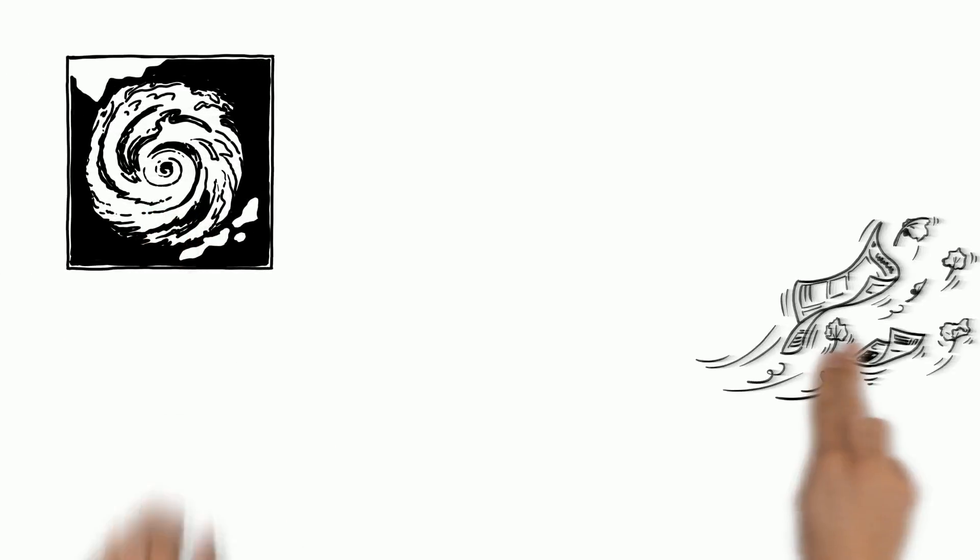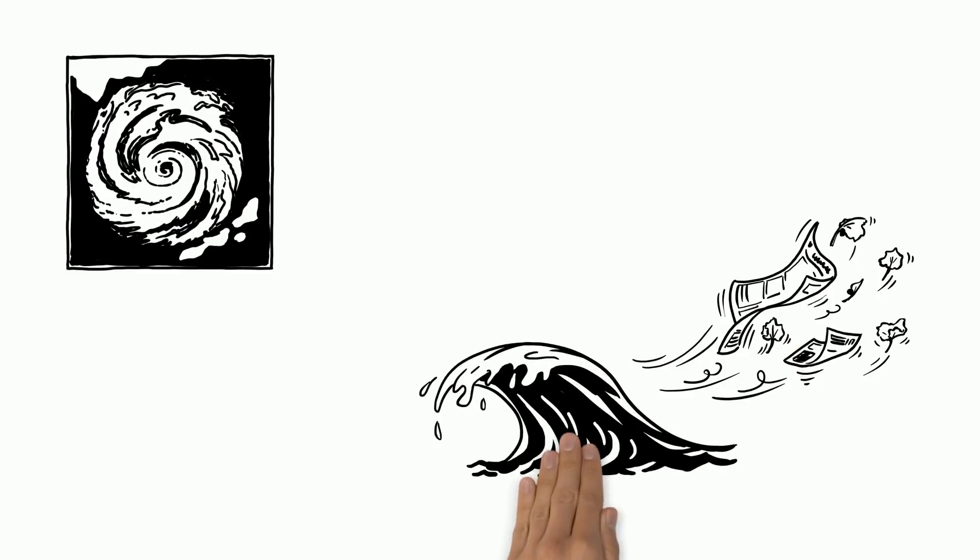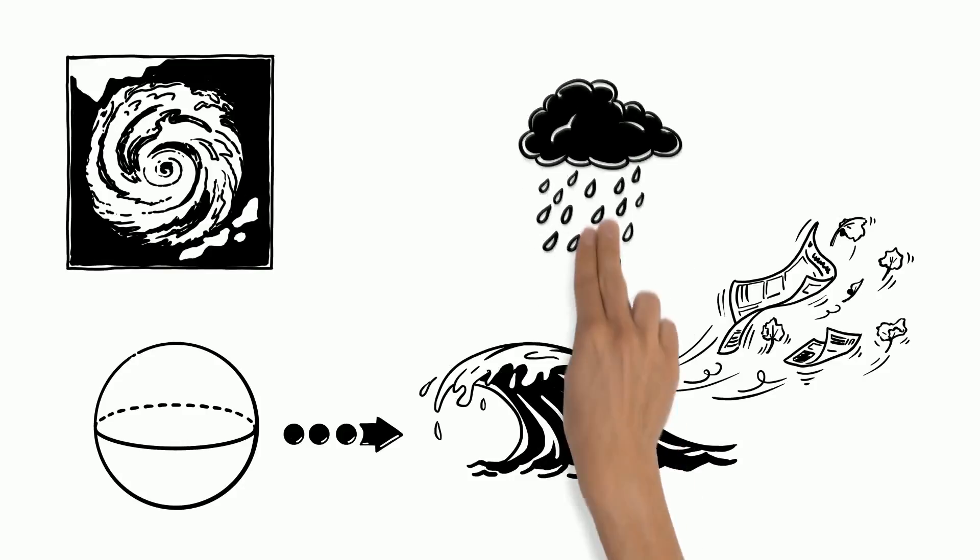A hurricane is a circular air movement over the warm ocean waters initially created on the Earth equator. Most tropical cyclones create strong winds and heavy rains.